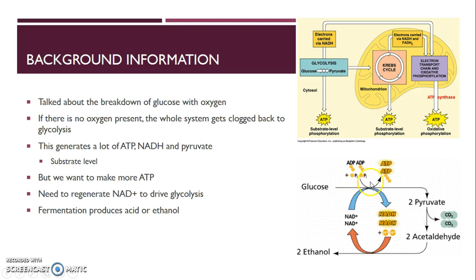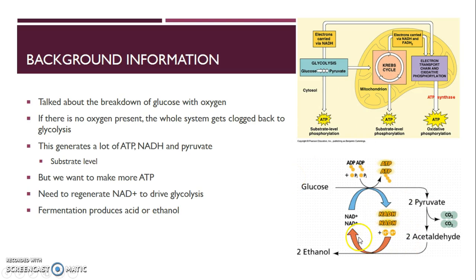Glycolysis does substrate-level phosphorylation — ADP and inorganic phosphate go in and leave as ATP — and it uses NAD+ to drive these reactions. It generates ATP, NADH, and pyruvate. But it's not enough ATP to do all the cellular work you need. The problem is that as you go through glycolysis, you use up all your NAD+, and if you do not have any NAD+, then glycolysis cannot occur. So you have to regenerate NAD+.